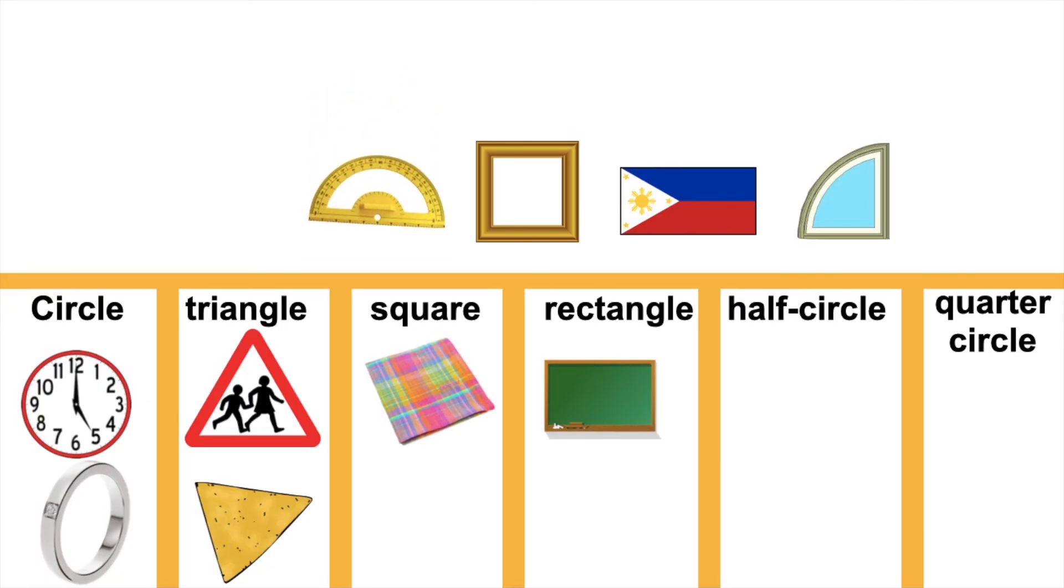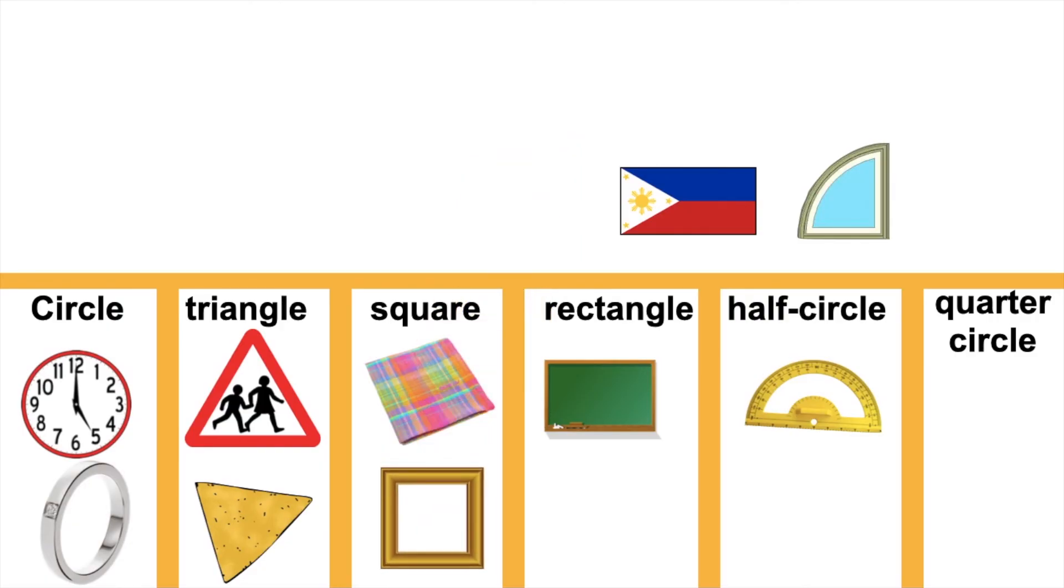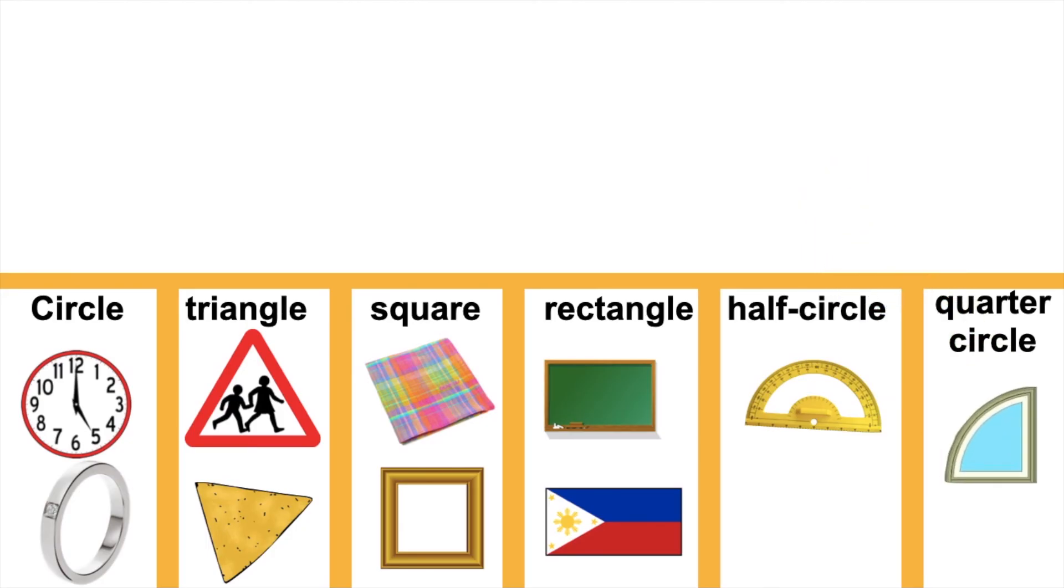How about this protractor? Fantastic! It's half circle. How about this frame? Very good, children! It's a square. How about this flag? Fantastic! It's rectangle. How about this one? Good job! It's quarter circle.